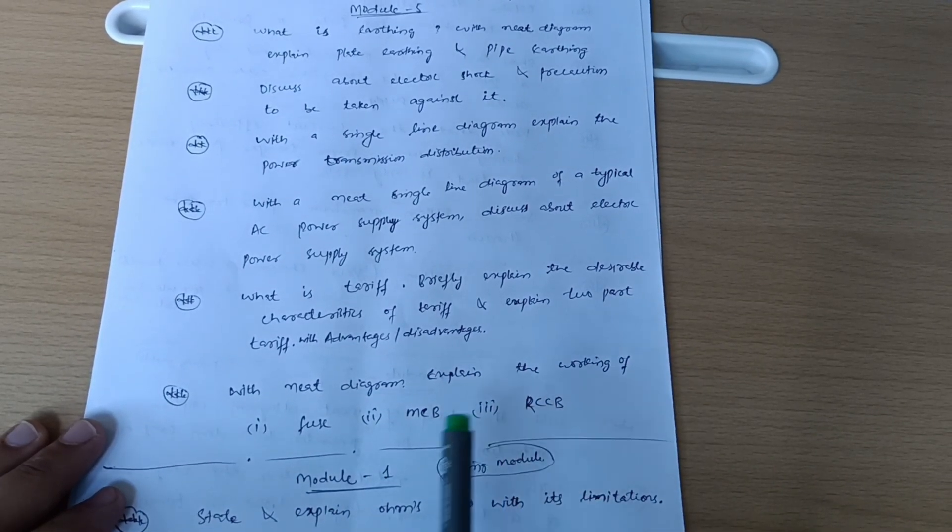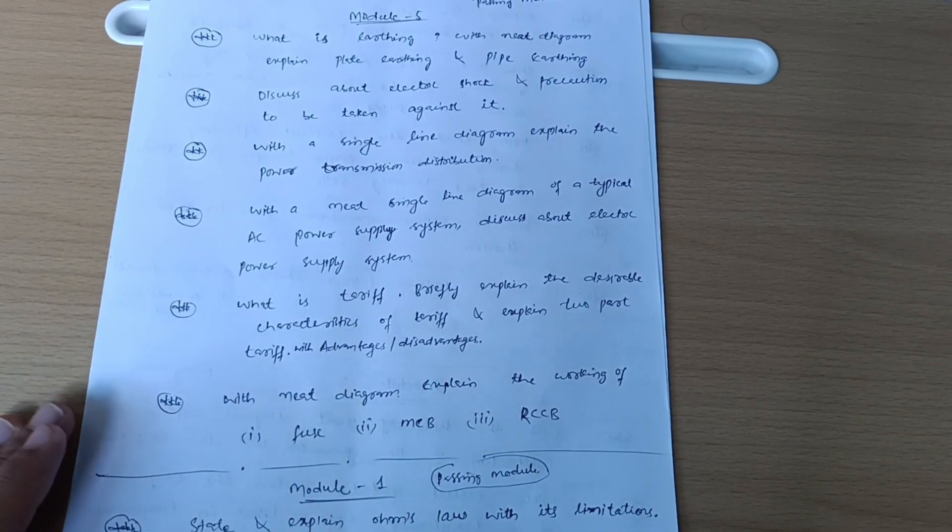Last question: with neat diagram explain the working of fuse, MCB, and RCCB. So these are the six questions which you have to go through from Module 5 itself.